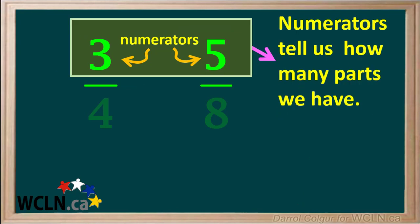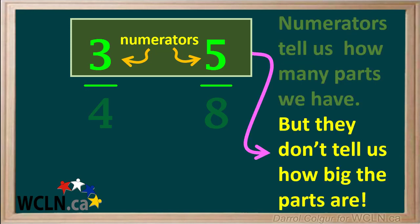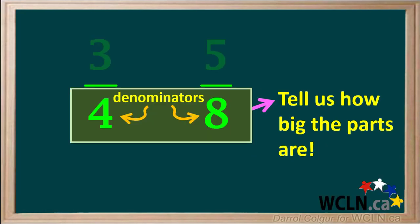The trouble is, numerators tell us how many parts we have, but they don't tell us how big each of the parts are. Remember, it's the denominators that tell us how big each of the parts are.